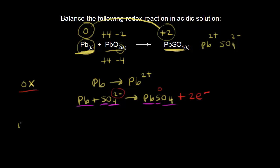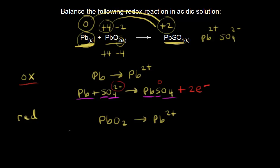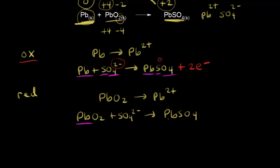Now we write the reduction half-reaction. Lead goes from plus four to plus two — that's a decrease in oxidation state, so it's reduction. The half-reaction is PbO₂ going to Pb²⁺. Again, we include sulfate since it's present: PbO₂ plus SO₄²⁻ goes to PbSO₄. Checking atoms: lead and sulfur are balanced. For oxygen, we have two from PbO₂ and four from SO₄²⁻ — six oxygens on the left — but only four on the right.